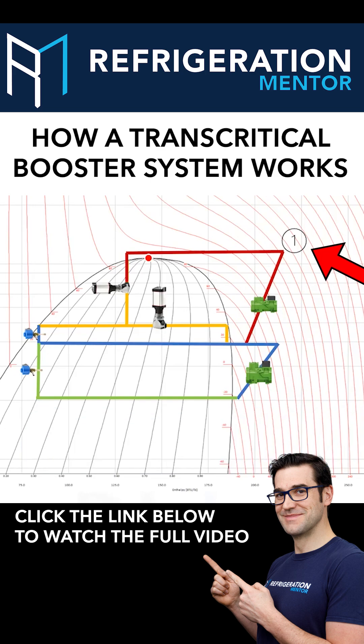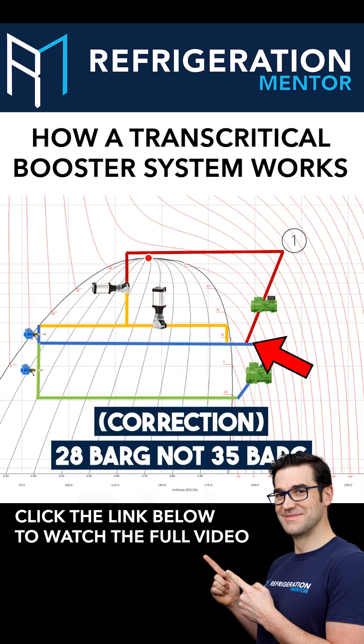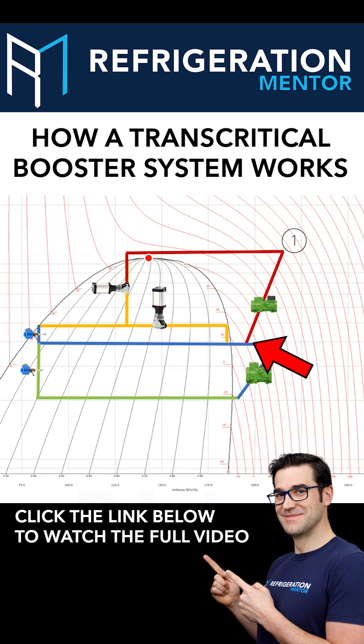So in this example here, we're at about 400 PSI, probably 35 bar-ish, and you're going into that transcritical mode. So you're in the middle of summer, it's 45 Celsius, 110 degrees Fahrenheit out, and all of a sudden, you're going right into critical, above the critical point.